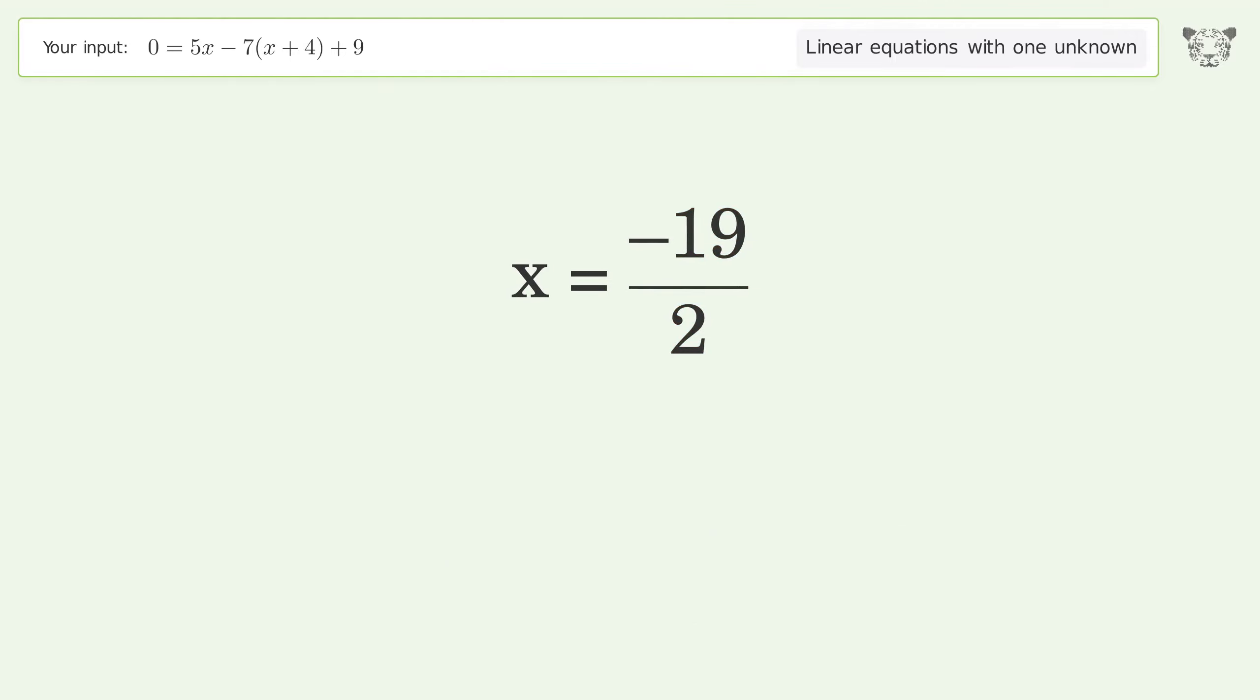And so the final result is x equals negative 19 over 2.